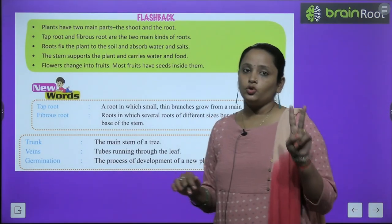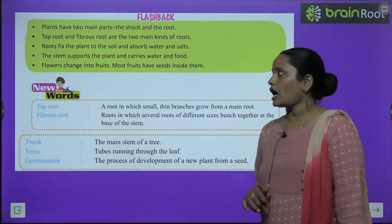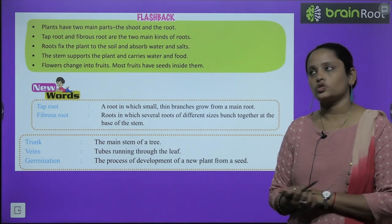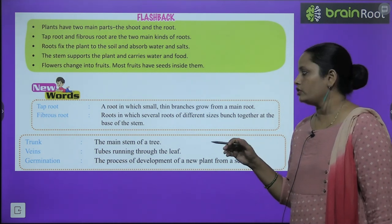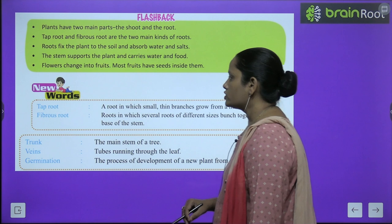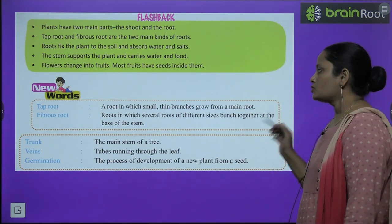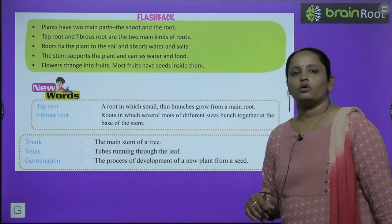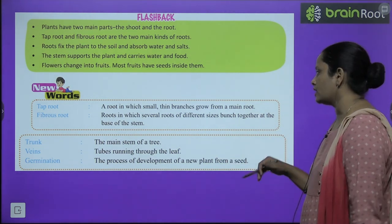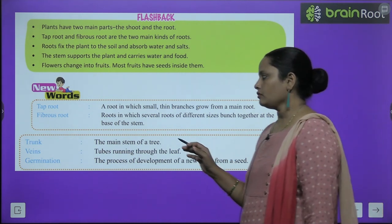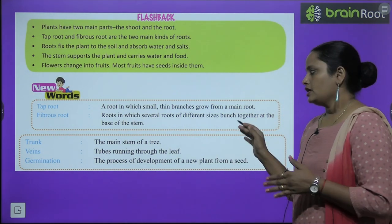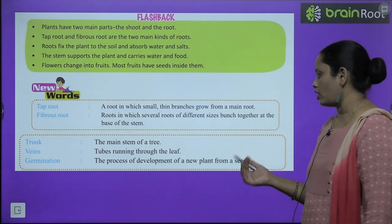Let's move on to the flashback. Plants have two main parts: the shoot and the root. Tap root and fibrous roots are the two main kinds of roots. Roots fix the plant to the soil and absorb water and salts. The stem supports the plant and carries water and food. Flowers change into fruits and most fruits have seeds inside them. New vocabulary: tap root is a root where small thin branches grow from the main root. Fibrous root — several roots of different sizes bunched together at the base of the stem. Trunk is the main stem of the tree. Veins are tubes running through the leaves. Germination is the process of development of a new plant from a seed.